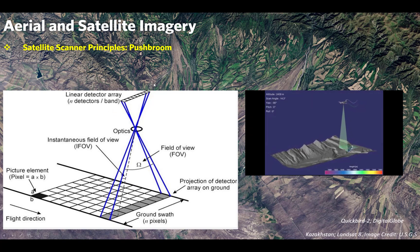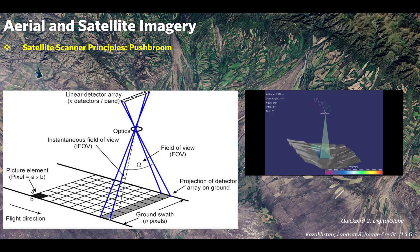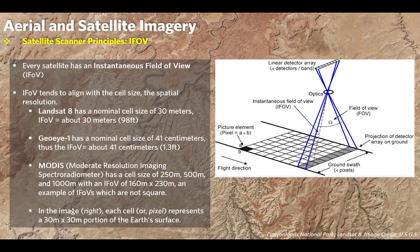Every satellite has an instantaneous field of view, which aligns with the cell size. We refer to this as the spatial resolution. Landsat 8 has a nominal cell size of 30 meters, so its instantaneous field of view is about 30 meters. Some early Landsat data was about 28.5 meters for a nominal cell — meaning it's square, 28.5 meters on a side. GeoEye has a nominal cell size of 41 centimeters.